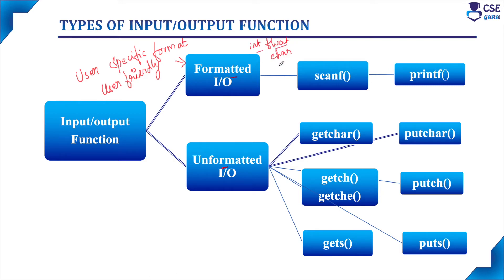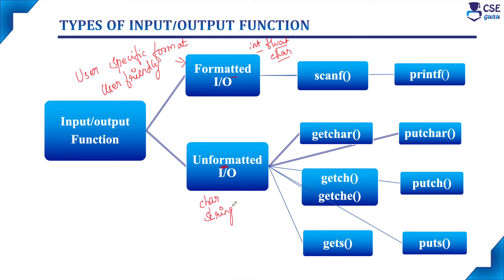The formatted input/output function can handle integer, floating point, character, and string data types. For the unformatted input/output function, there is no user-specific format — it uses a predefined format only, and it can process only character and string data. It cannot handle integer and floating point values.